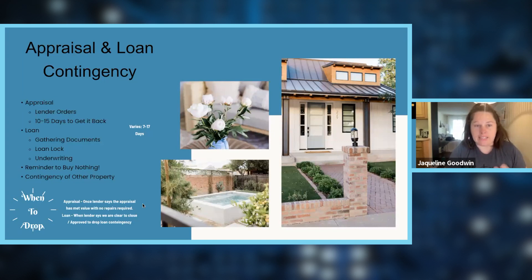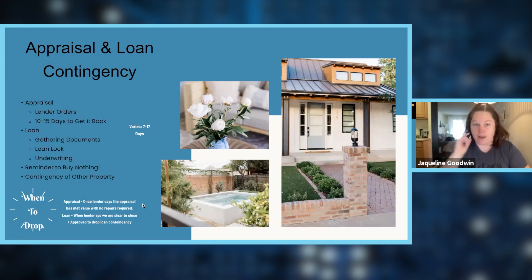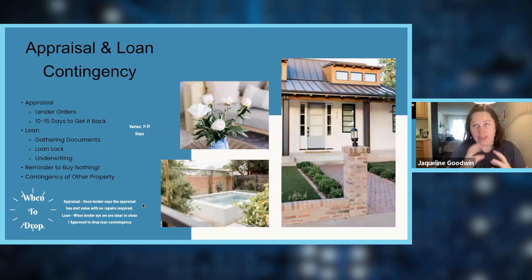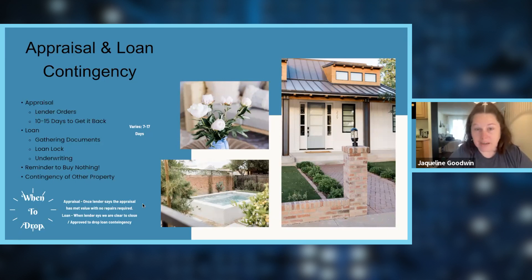There's one other contingency becoming more frequent: contingency of another property. This is when your buyer currently owns a home they need to sell in order to buy the new one. It just means syncing up dates — they cannot purchase the current home unless the previous one closes first. It adds an extra contingency to work with, but it's totally normal.